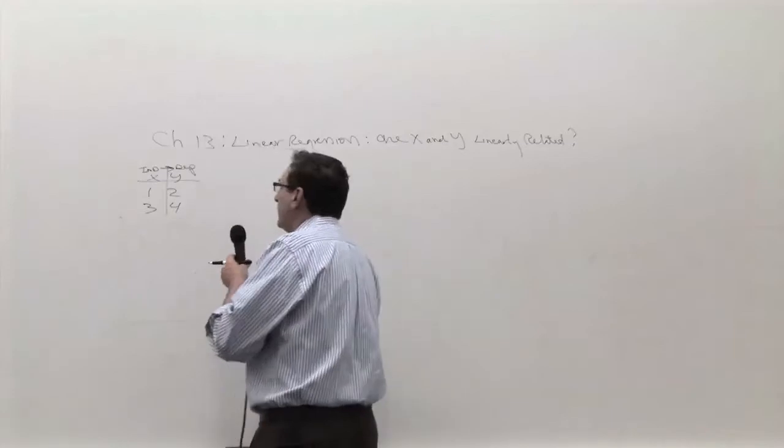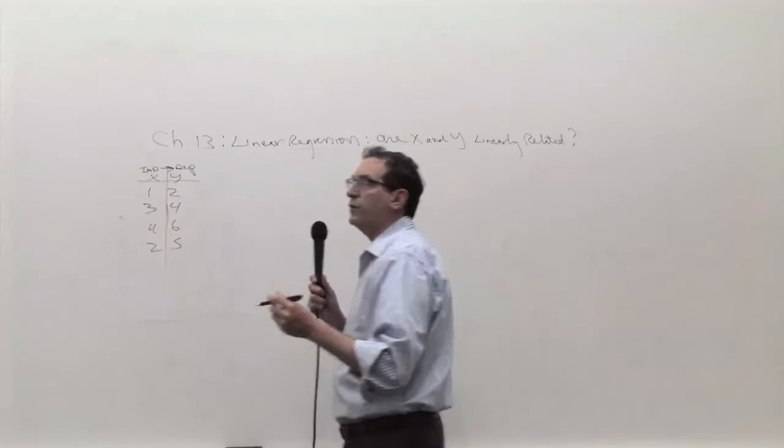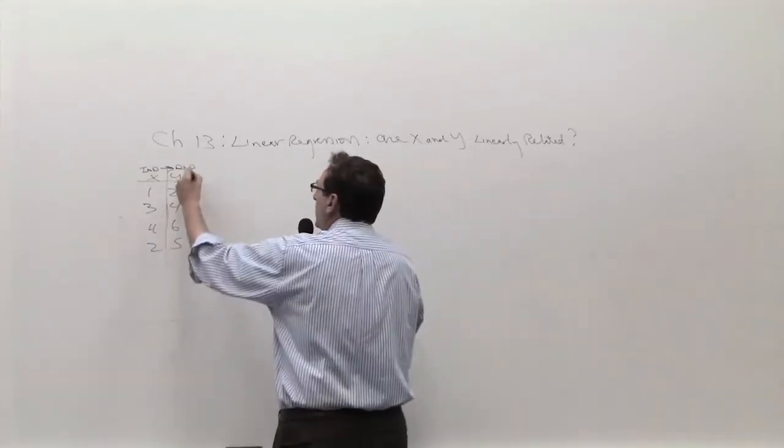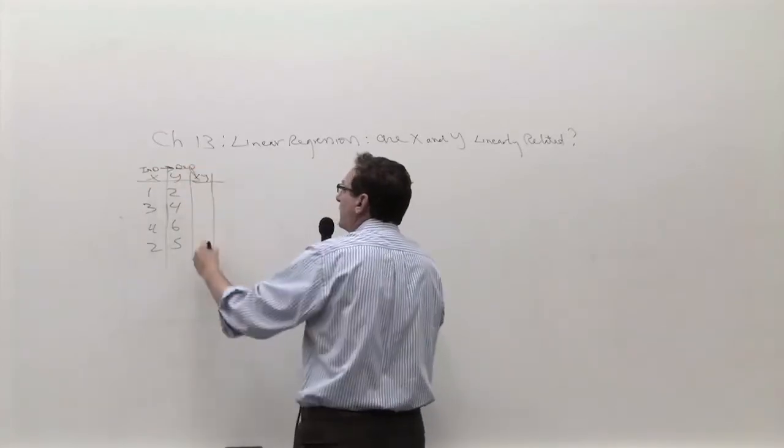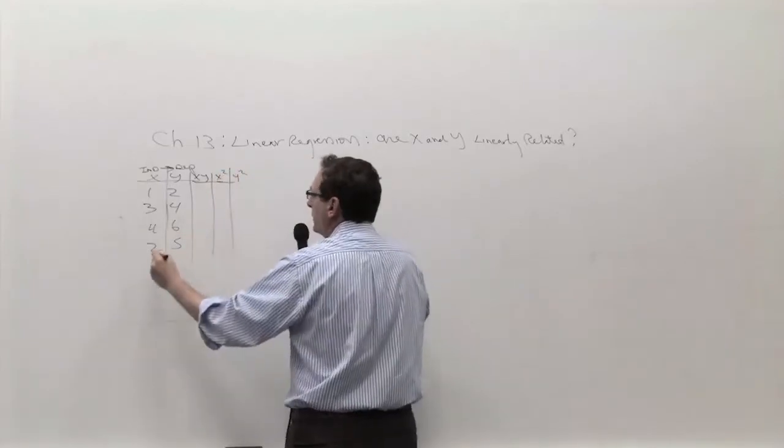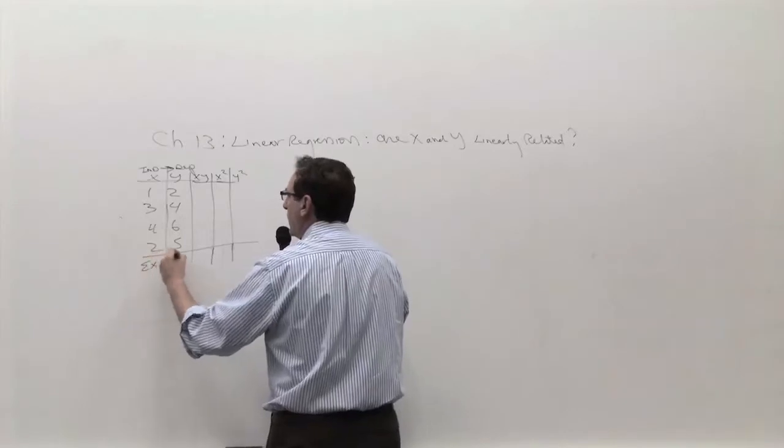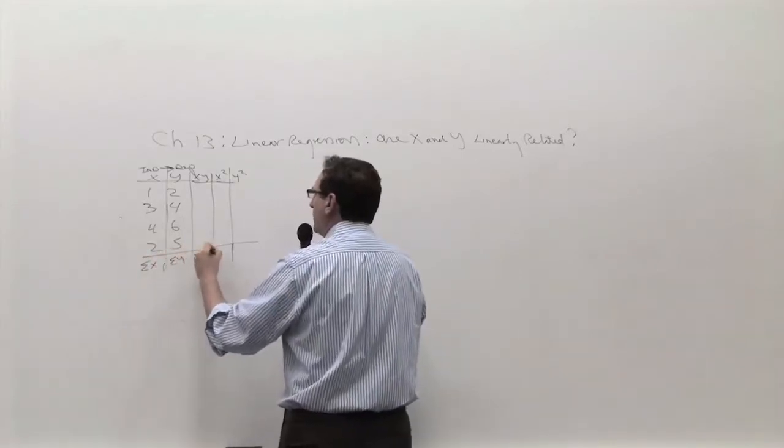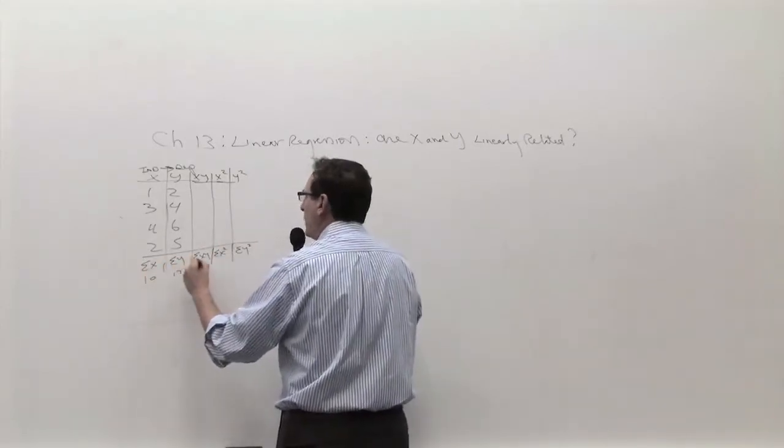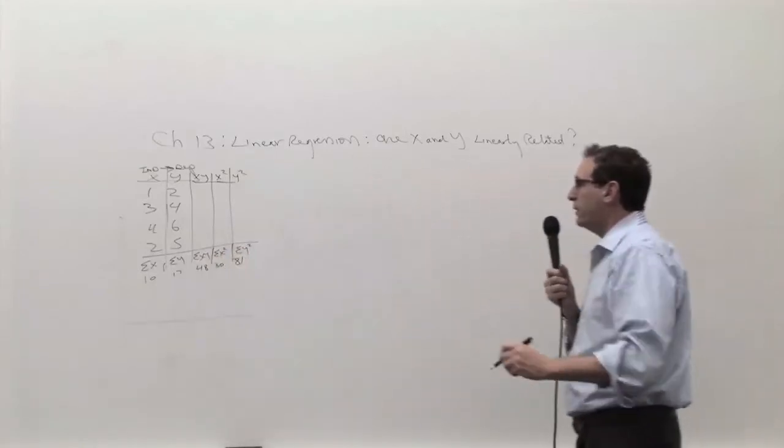Of course, the order doesn't make any difference because you're just taking the sums of these columns. You'd have to calculate for purposes of all the other formulas, the next three formulas: x squared, y squared, and more importantly, getting the sums of those columns. So the sum of the x, the sum of the y, the sum of the xy, the sum of the x squared, the sum of the y squared. This is 10, this is 17, this is 48, this is 30, and this is 81.